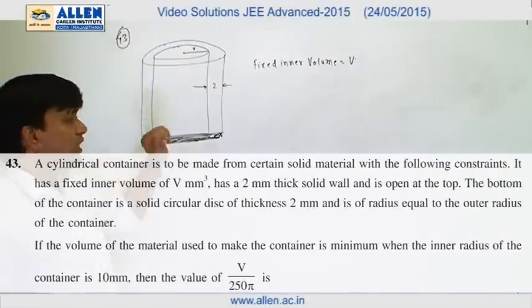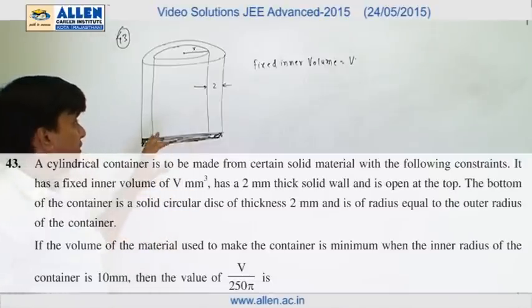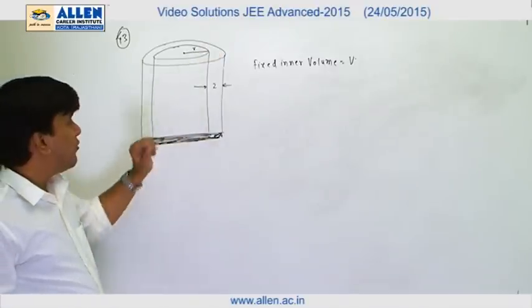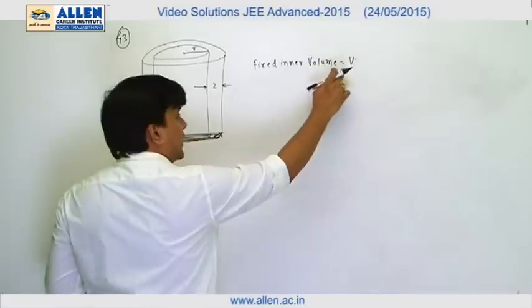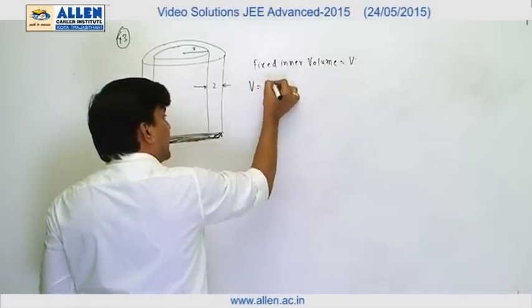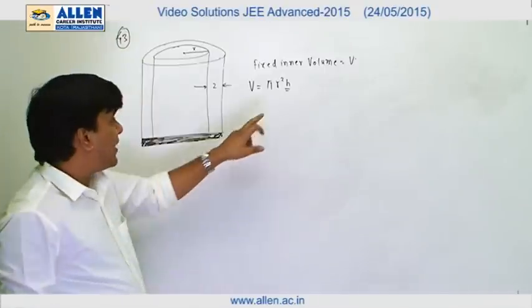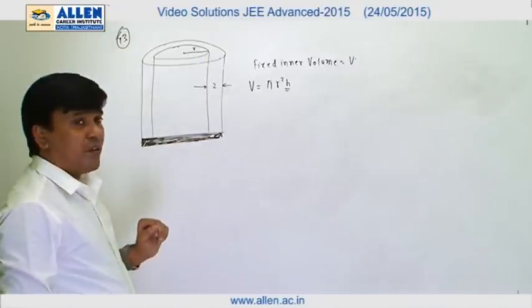In question number 43, there is a cylindrical container whose thickness is 2 and the inner volume is fixed. If the inner volume is fixed, we can write this as π r² h, where h is the height of the cylinder and r is the radius of the inner part.